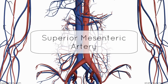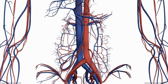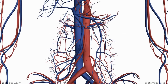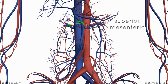This is a tutorial on the superior mesenteric artery. We're looking here at a view of the abdominal aorta with the inferior vena cava sitting to the right. You can see the celiac axis at the top, and just below it, you've got an artery coming off anteriorly. This is the superior mesenteric artery.